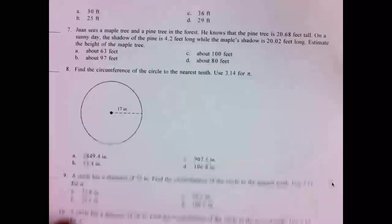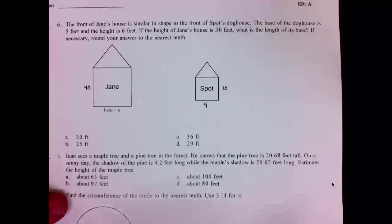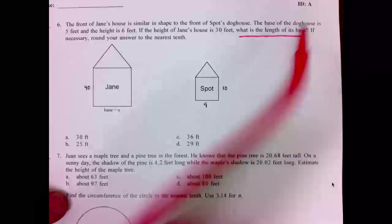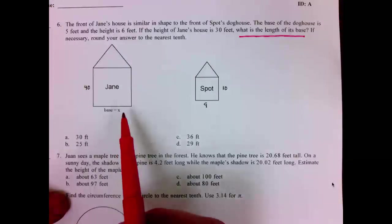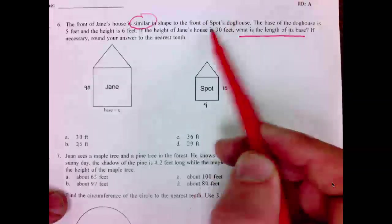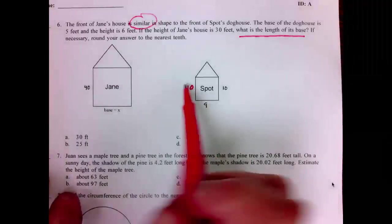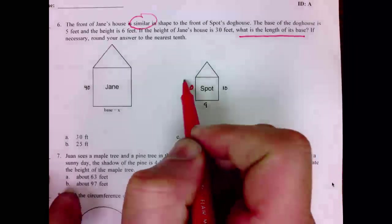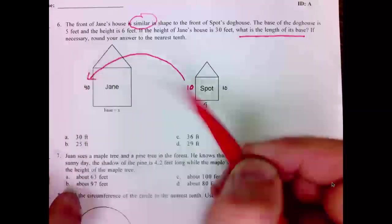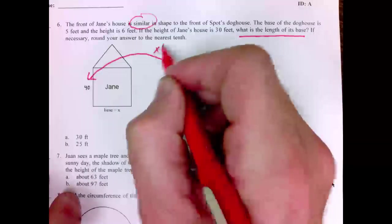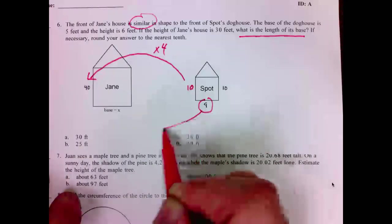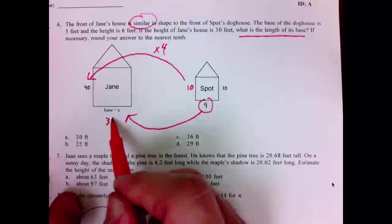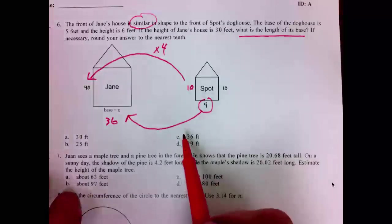Number 6. What is the length of the base? We're looking for the base, X here. It says the front of Jane's house is similar in shape to Spot's doghouse. We know they're similar, so they're proportional. Well, if this side is 10, we know that this side is 10. So, 40 to 10, how does that happen? It's 1 fourth as much. So, the question is, what number times 1 fourth would give 9? Said another way, 10 times what gives 40? Well, 10 times 4. Thus, 9 times that same 4 will give X to be 36. X is 36. The correct answer on 6 is C.